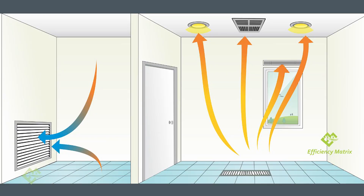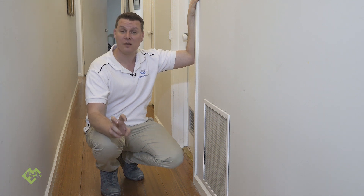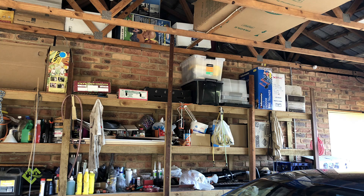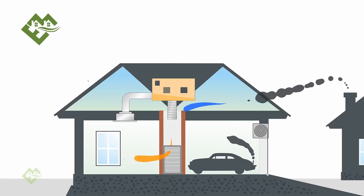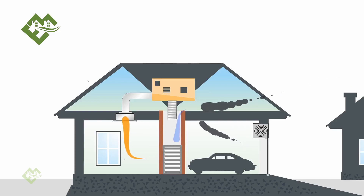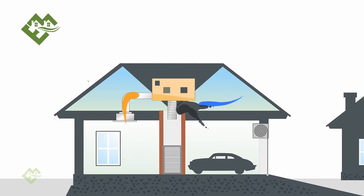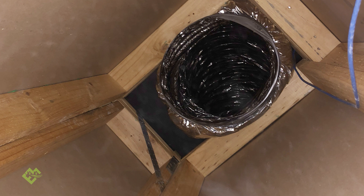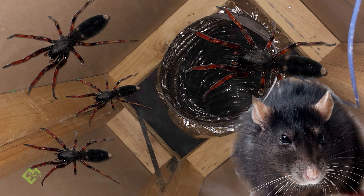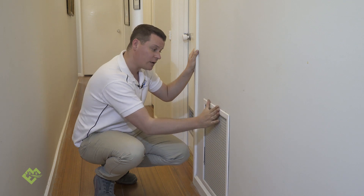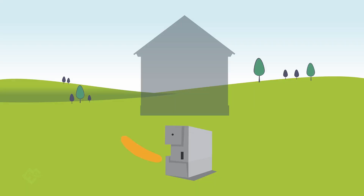That's air coming directly from outside of your home, not being filtered, and also potentially coming from your garage where you could have carbon monoxide, or even from directly outside where your neighbours may be burning off. The return can also be the main entry point for spiders, insects, and even rats. So airtightness of ducted heating systems is absolutely important and pivotal for the overall efficiency of heating a home.